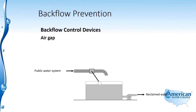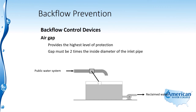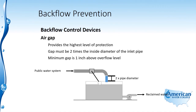Now we're going to take a look at different backflow control devices. The air gap is the first one we'll look at, and it provides the highest level of protection. The gap must be two times the inside diameter of the inlet pipe — the space between where the water comes out of the pipe and the maximum surface of where that water is going must be two times the pipe diameter. There is also a minimum gap of one inch above the water level required, so in small diameter piping systems there needs to be at least one inch of air gap.